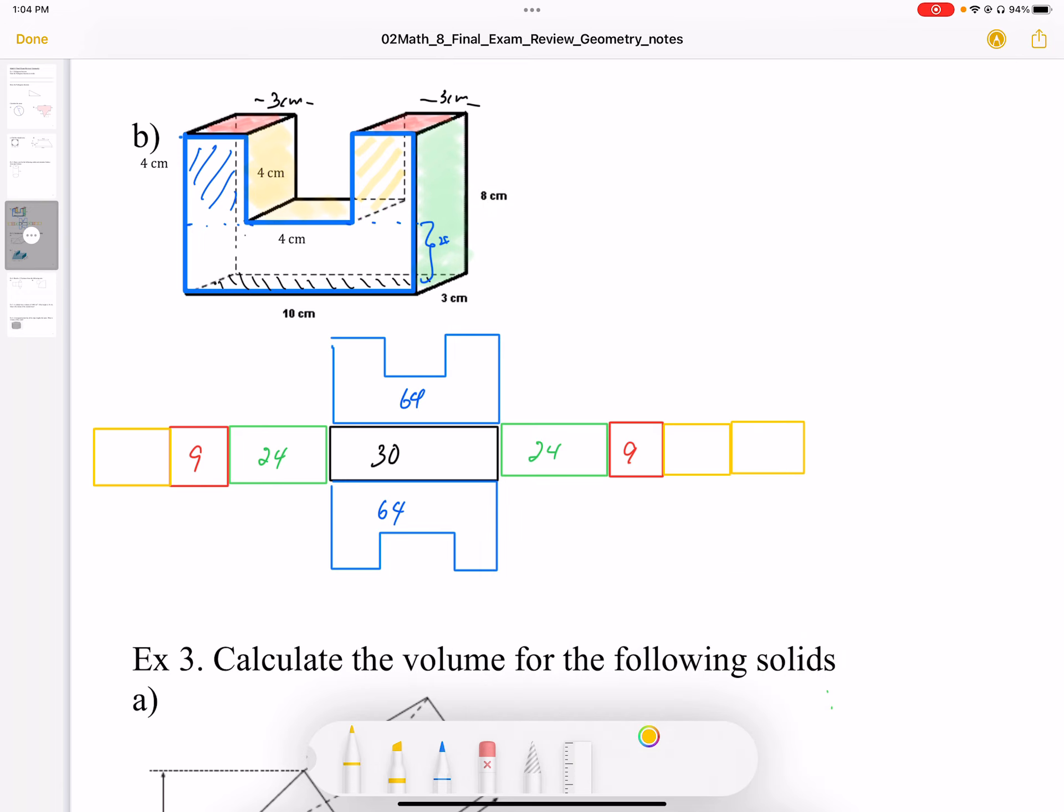For the inside U part, it's going to be 3 by 4. So 3 thick, 4 high. So this is going to be 12 and 12. And the bottom of that U is going to be 12 as well.